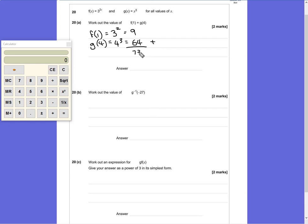9 + 64 = 73, meaning the answer to the question is 73.